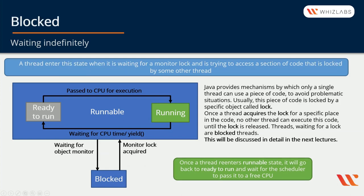Now, this is the Blocked state — you will probably not understand it fully now, but you will once we explain how thread synchronization works. A thread enters a Blocked state when it is waiting for a monitor lock and is trying to access a section of code that is locked by some other thread. Java provides a mechanism by which only a single thread can use a piece of code to avoid problematic situations. This piece of code is locked by a specific object called a lock or monitor. Once a thread acquires the lock for a specific place in the code, no other thread can execute that code until the lock is released. Threads waiting for a lock are blocked threads. This will be discussed in detail in the next lectures.